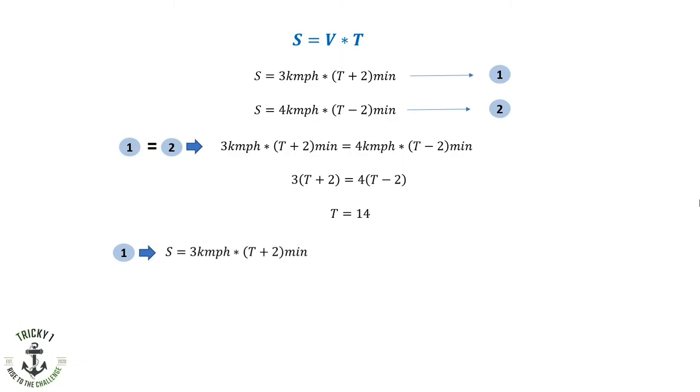So S equals 3 km per hour times 14 plus 2 equals 16. So 3 km per hour times 16 minutes. So S equals 3 times 1000 divided by 60 times 16. If we simplify the equations, you will get S equal to 800 meters. So the distance I need to travel to catch the train is 800 meters.